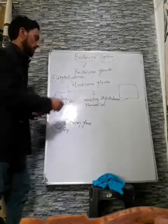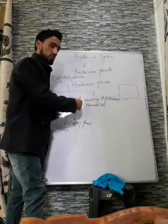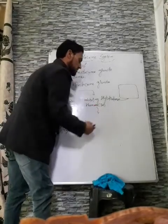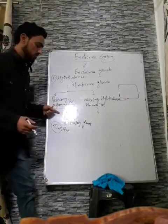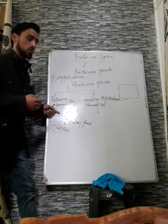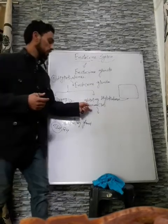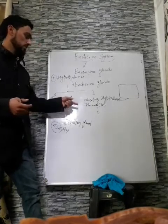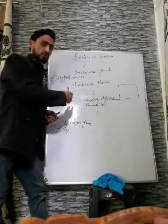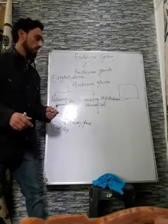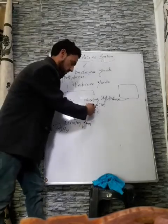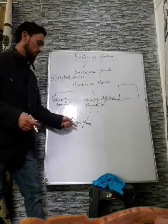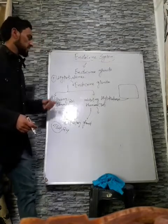Inhibiting hormones are also secreted by the hypothalamus into the blood and reach the pituitary gland. Their function is to inhibit — stop — the secretion of the respective hormones of the pituitary gland. When the pituitary gland receives an inhibiting hormone, it stops the secretion of that particular hormone into the blood.